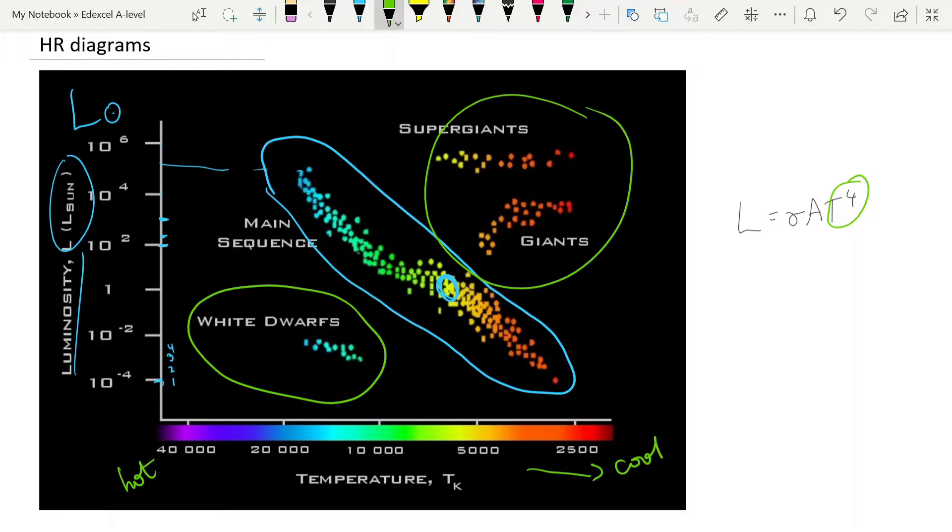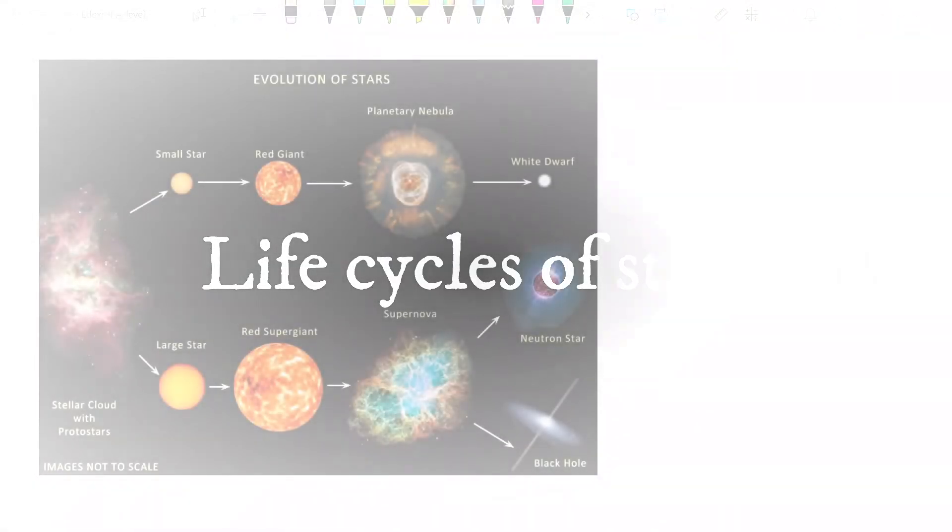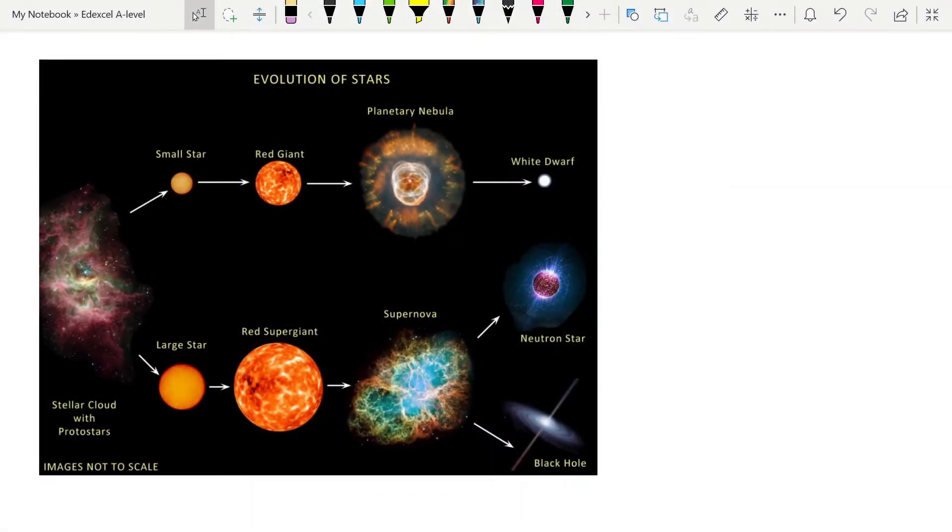Now the HR diagram connects in with the life cycle of a star, and you need to be able to track the life cycle through the HR diagram. So we're going to spend some time looking at life cycles. This very nice diagram summarizes it beautifully. To start off we have a stellar nebula, and this is the birthplace of stars.